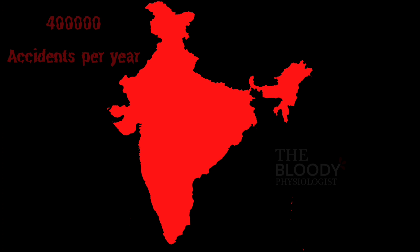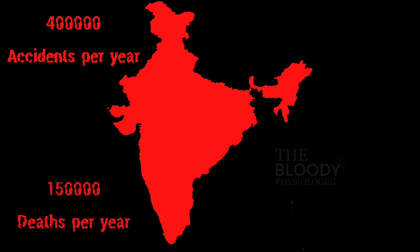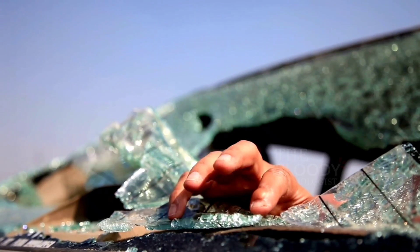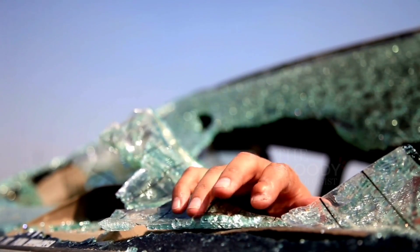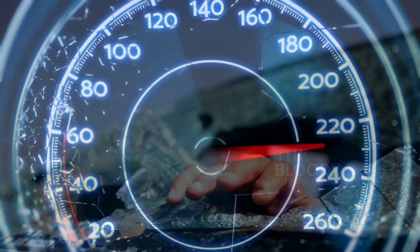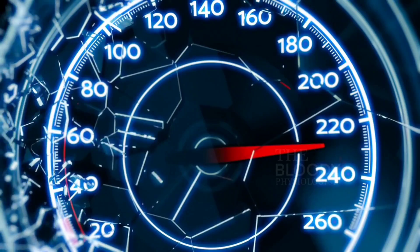Every year almost 400,000 road traffic accidents are reported in India. An estimated 150,000 people lose their lives in one. That means about 15 to 20 people die in a road traffic accident every single hour in our country. Many more are critically injured. Accidents involving cars recorded the highest number of injuries and fatalities, next only to two wheelers. The reason for almost 75% of these accidents is over speeding.